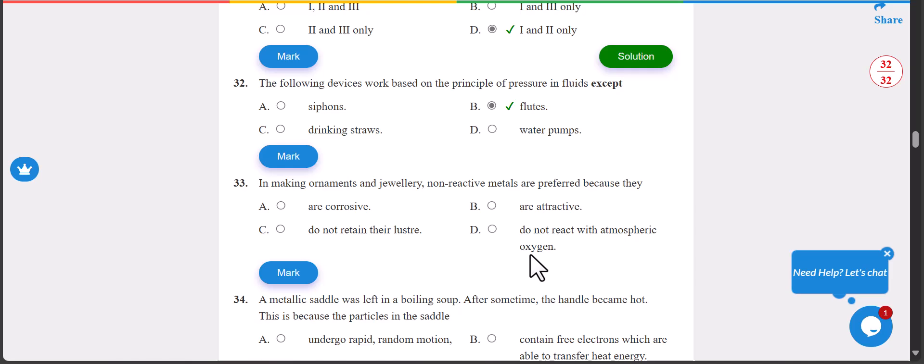Number 33: in making ornament and jewelry, non-reactive metals are preferred because they do not react with atmospheric energy. 33 is D.